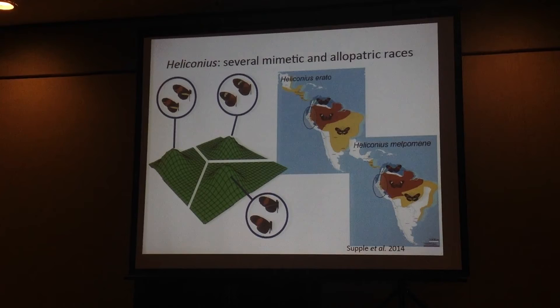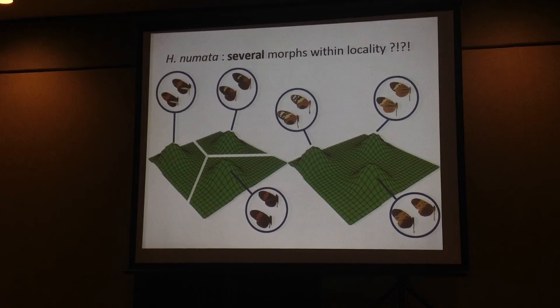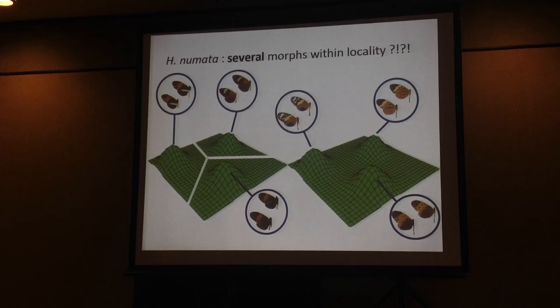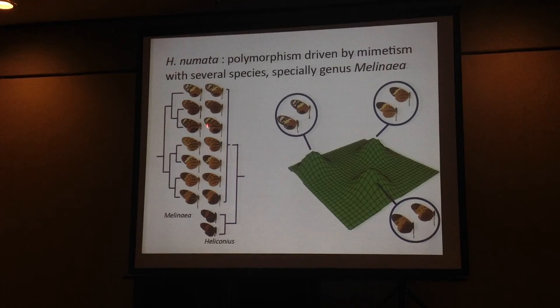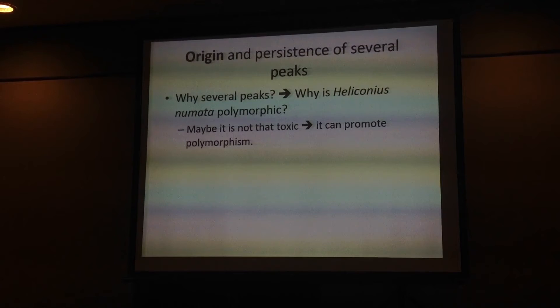However, for my PhD, I am studying another species that apparently is polymorphic within locality. It's called Heliconius numata, and it doesn't make much sense. The idea is that this polymorphism is driven by mimicry with several species from a distantly related genus called Lemnea. Here are different species, and here are different morphs of the Heliconius numata species.